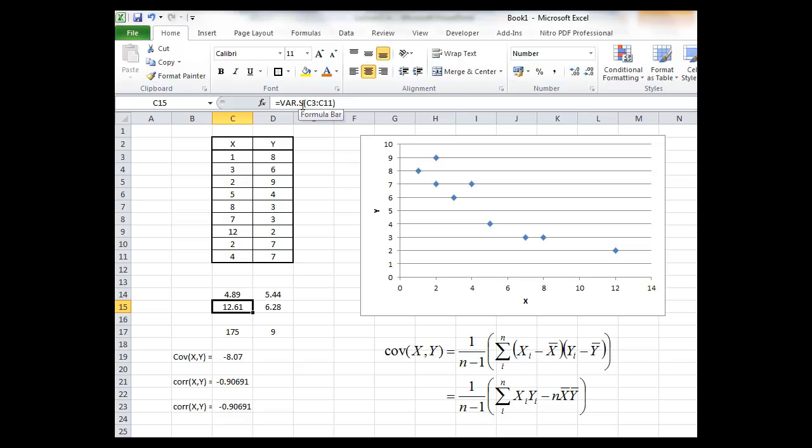We've also calculated the variances. Now notice that I'm using the var.s formula which means the sample variance, which means that the divisor is n minus 1. If I had been calculating the population variance, the divisor would be n. But we're dealing with a sample here.